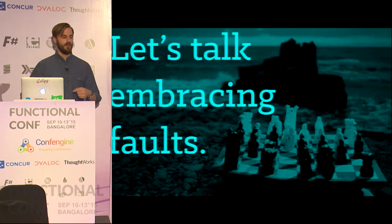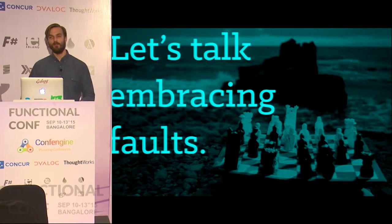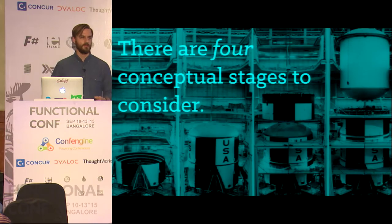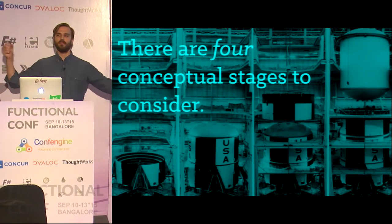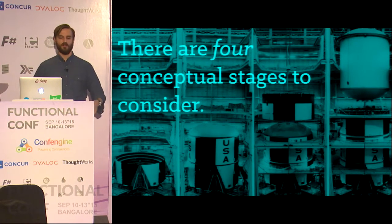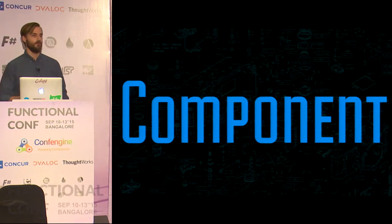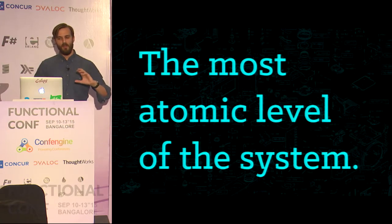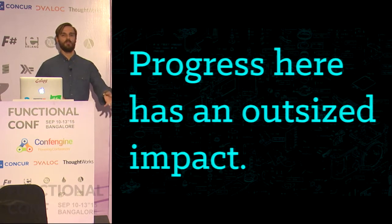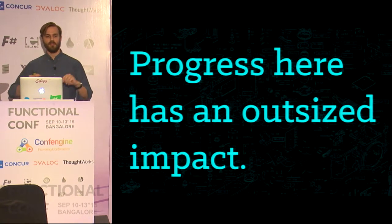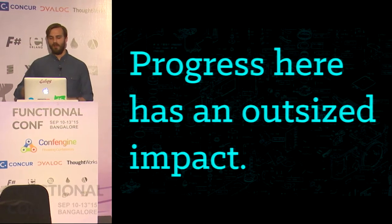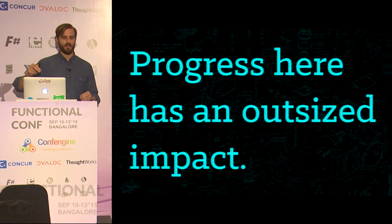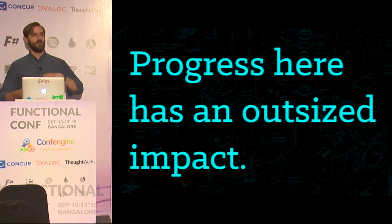Let's talk about embracing faults — this is the option that will allow you to build systems that probably won't fall over without having $100,000 per line of code. There are really four conceptual stages to consider when building a system like this. The first one is the component level — the most atomic level of the system. These are things like individual modules, individual functions even. Progress here has an outsized impact because faults at this level bubble out, and the more they bubble out into the system, the less you know exactly where the fault occurred.